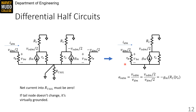The voltage gain for this half-circuit is given by the differential output voltage over the differential input voltage. We don't have vodm or vdm directly in our circuit — instead we have vodm/2 and vdm/2. On the upside, these factors of 2 cancel out, which means that calculating the gain from one half-circuit node to the other still gives us the differential mode gain. And that differential mode gain, because this is a common emitter, is just −gm × (RC ∥ ro).